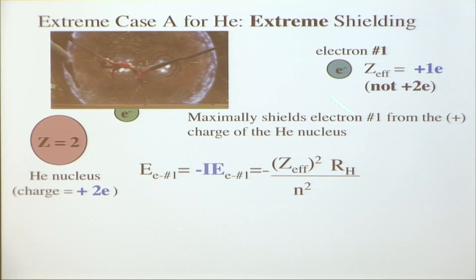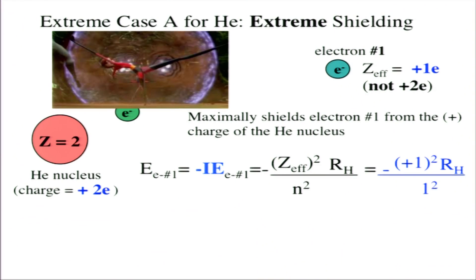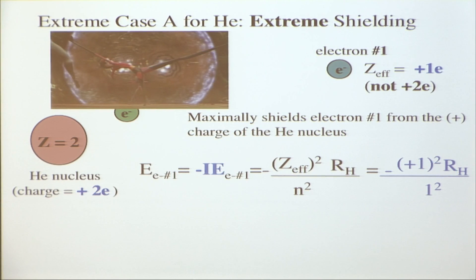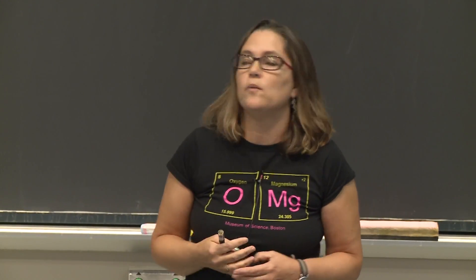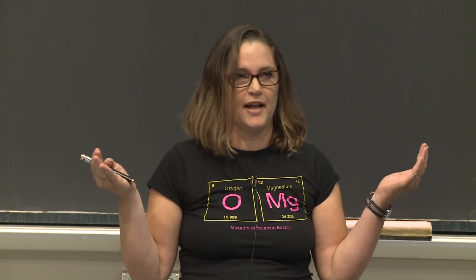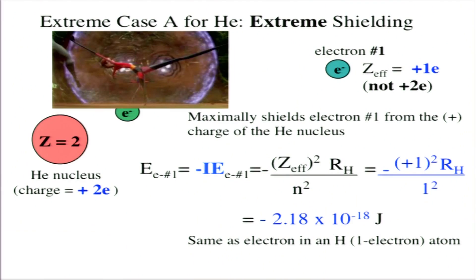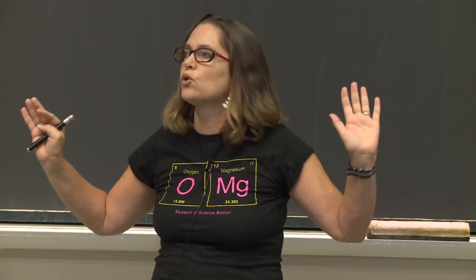We can calculate the binding energy for this case: binding energy of electron 1 equals minus its ionization energy, equals minus z-effective squared times R_H over n-squared. Plugging in z-effective equals 1 over n equals 1, we get minus 2.18 times 10 to the minus 18 joules — just the Rydberg constant, like a hydrogen atom one-electron system. This is an exaggerated case of total shielding.